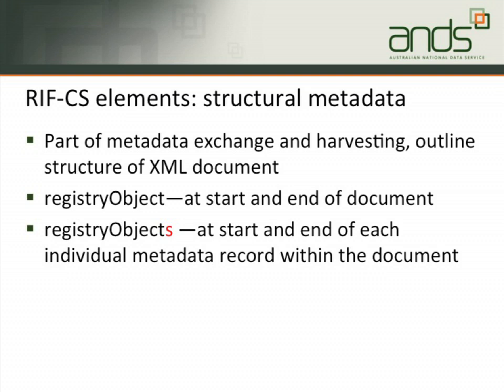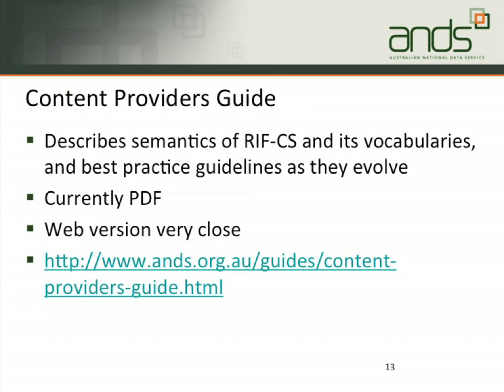One of the first things that has to happen if RIFCS is going to be provided to ANS is that somebody's got to sit down, look at what metadata you've already got, and map it to what we want to have. This document on our website tells you about the semantics of all the elements and the vocabularies. This is where we're going to keep updating all the guidelines about how the vocabulary should be applied. There would be a full web version except I haven't quite finished it yet, so at the moment it's available as a PDF.